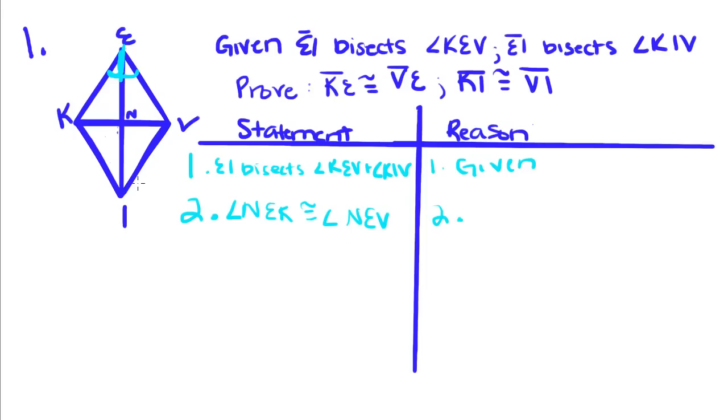And we can do the same thing down here. Because if this bisects this angle, that means this angle is congruent to this angle. So angle NIK is congruent to angle NIV. If bisects an angle, split into two congruent angles.